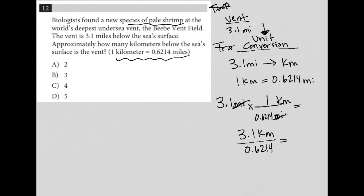And when I go to my calculator and divide 3.1 by 0.6214, I get 4.9887 and there's some more numbers there. So the question does say approximately, so obviously this number here is approximately 5. So the correct answer here is choice D.